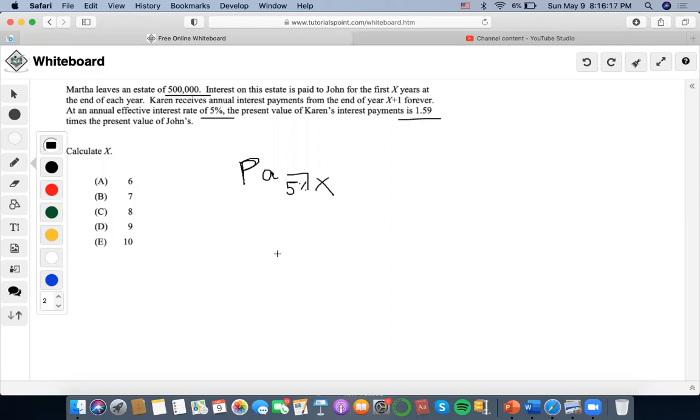So that would mean that Karen receives annual interest payments from 1.05 year X plus one, from the end of year X plus one forever, right? Which means that since John is being paid interest for the first X years, Karen starts to receive interest payments from the end of year X plus one, moving on forever.